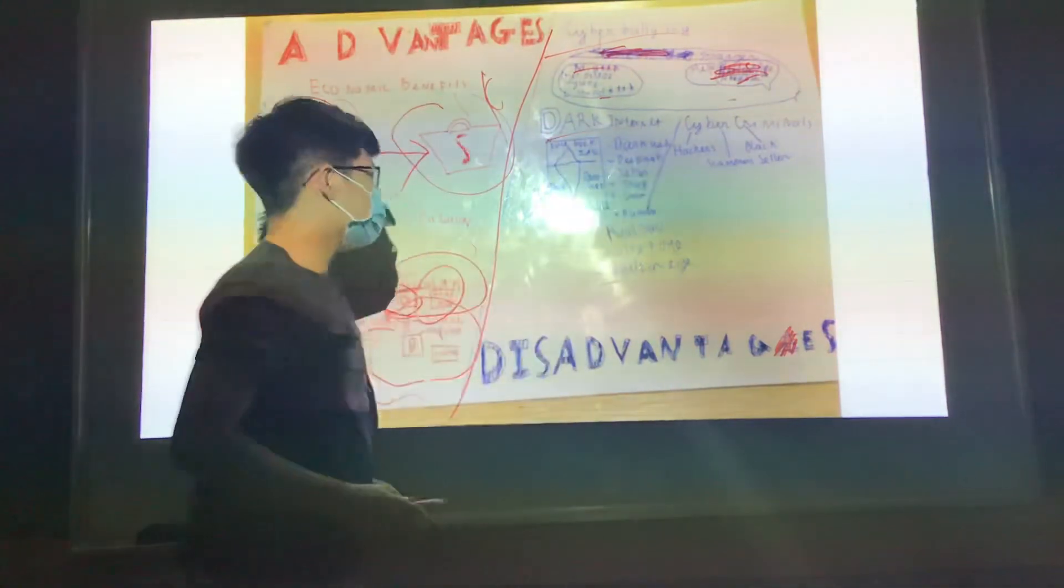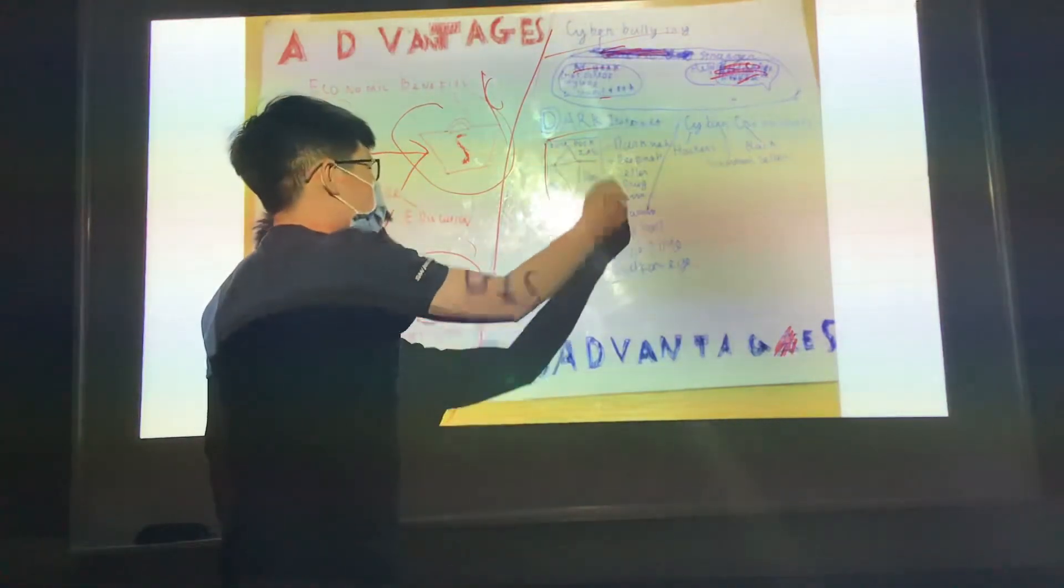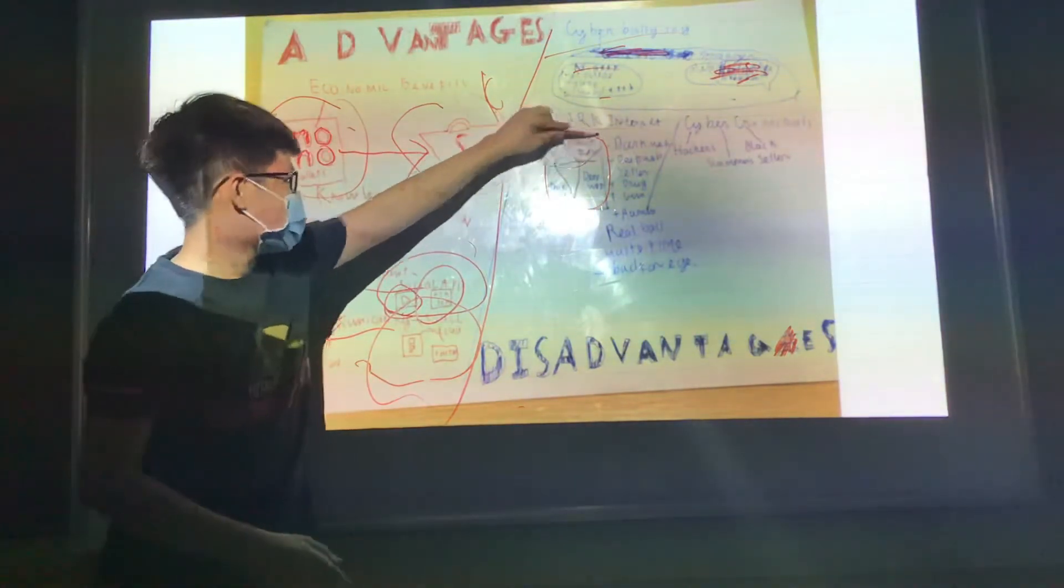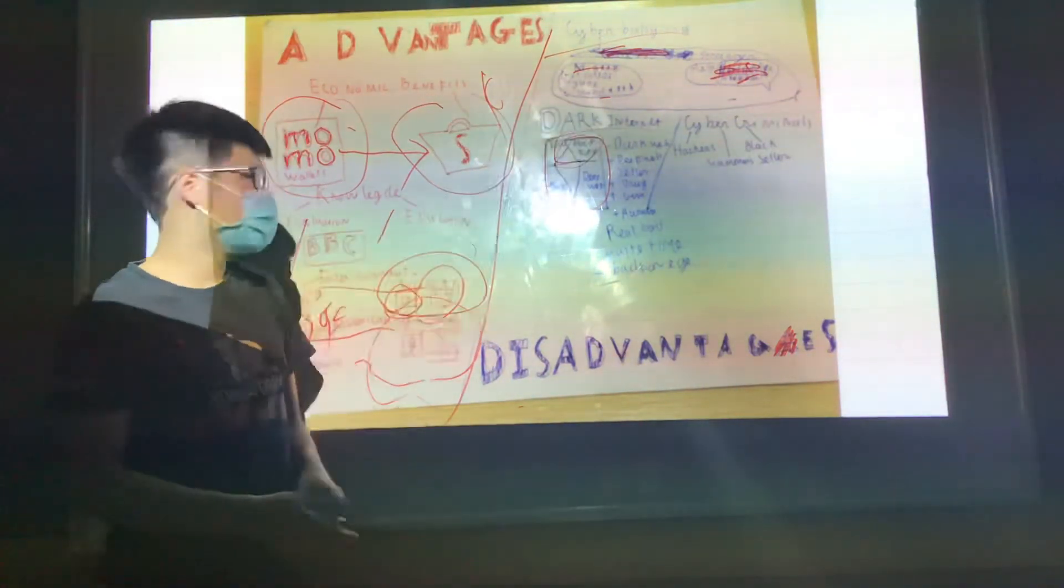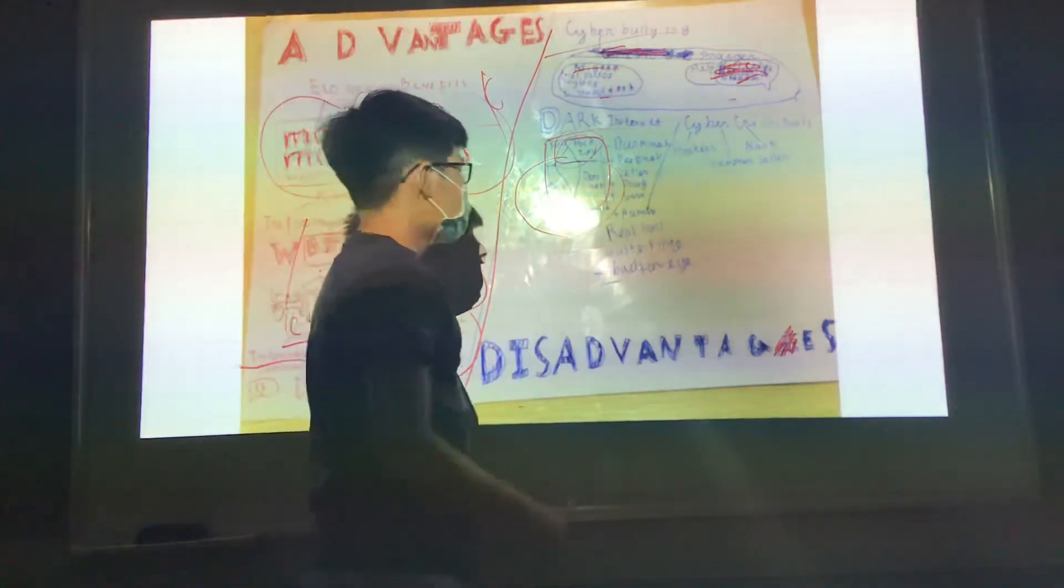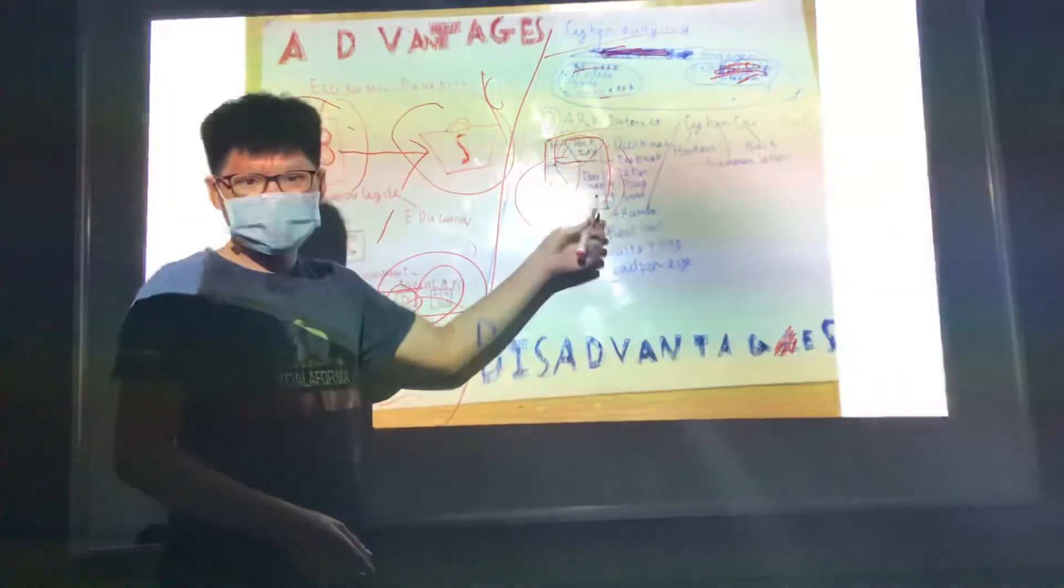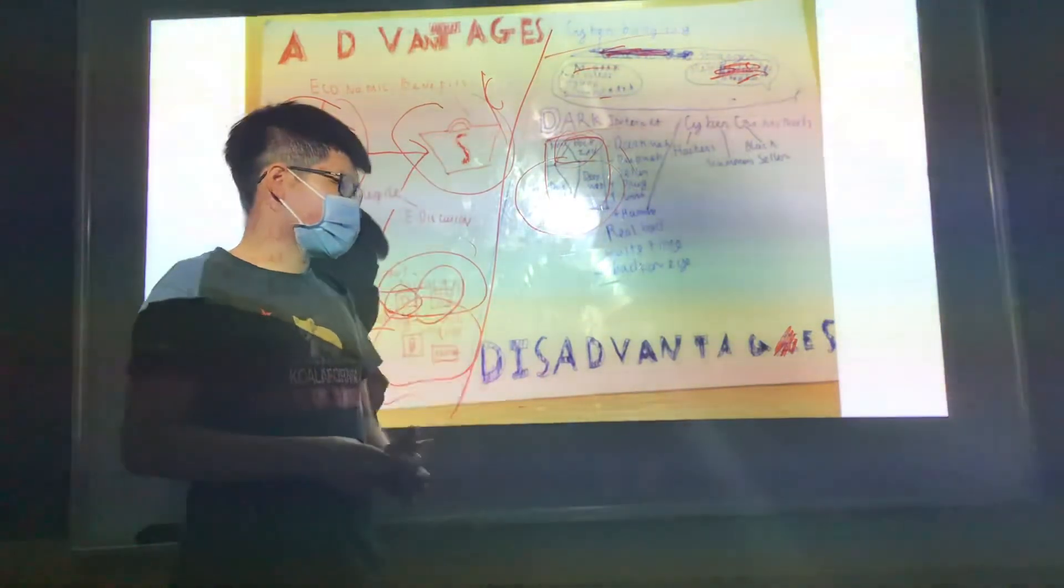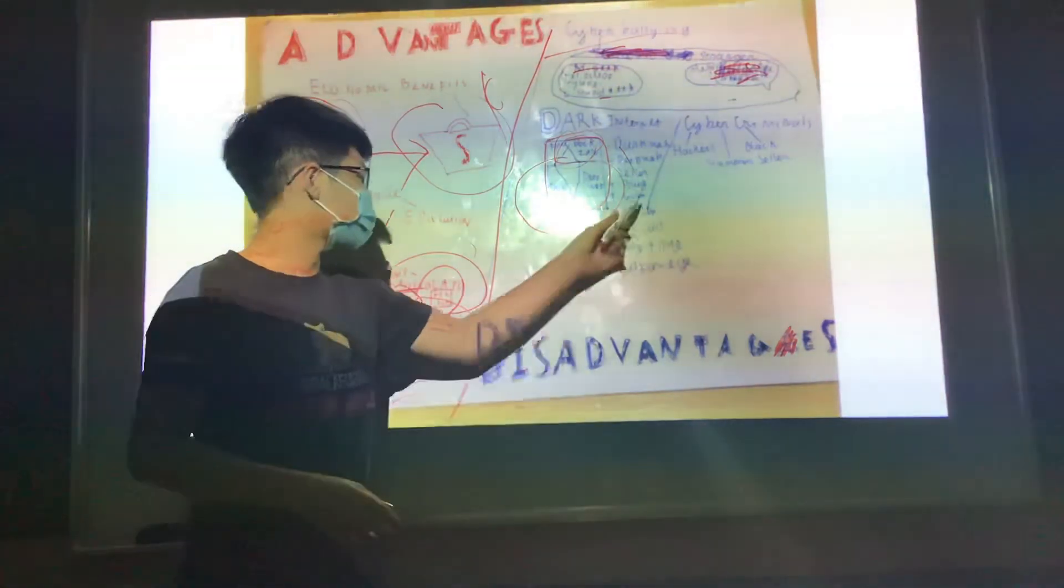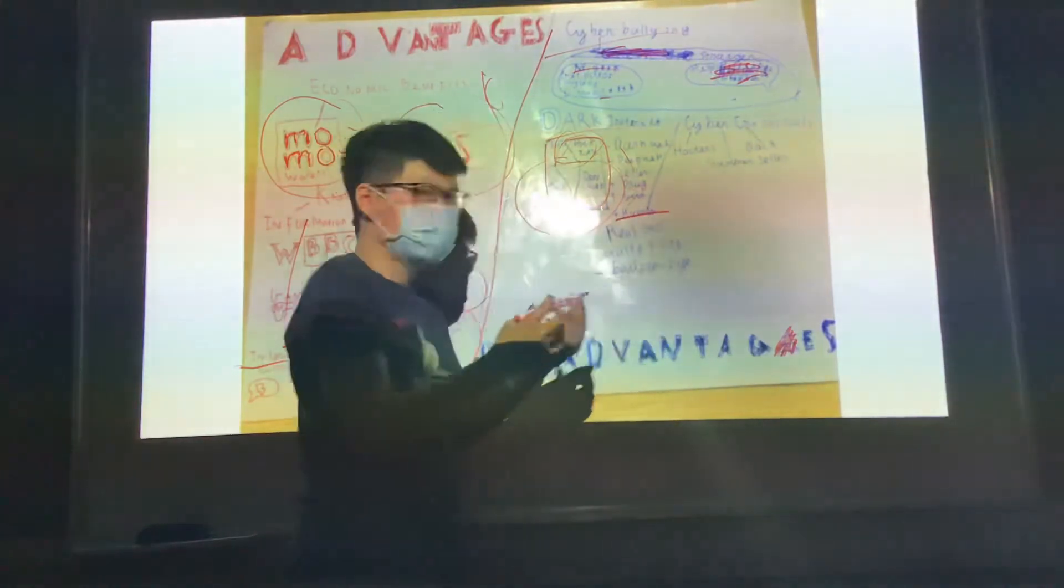And next is internet. We have this picture I draw. In here, we have the surface web. And down here, we have deep web and dark web. And in deep web and dark web, we have black sellers. They sell drugs, they sell bank info, or they can sell humans.